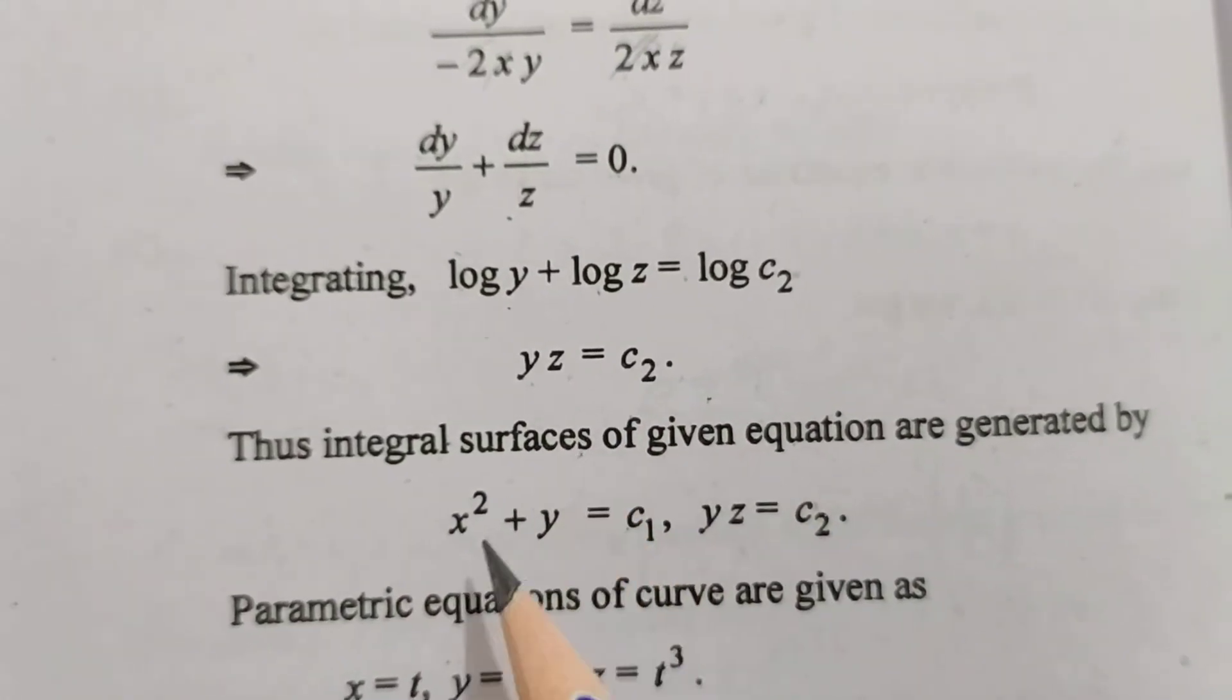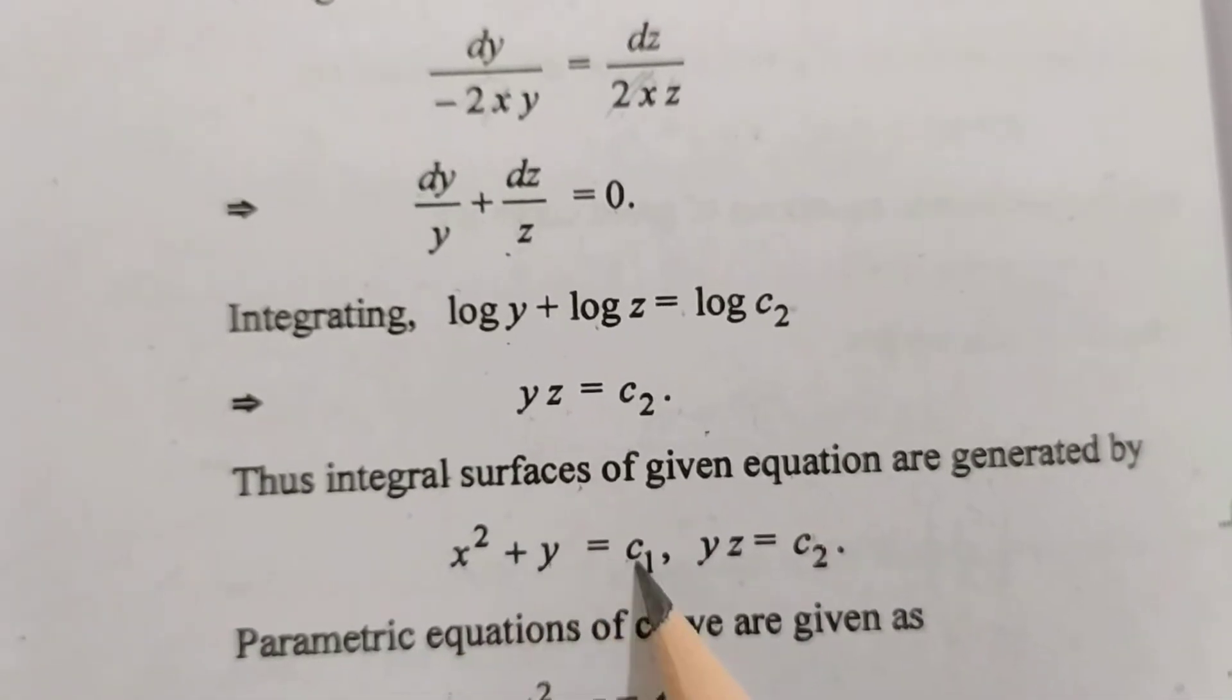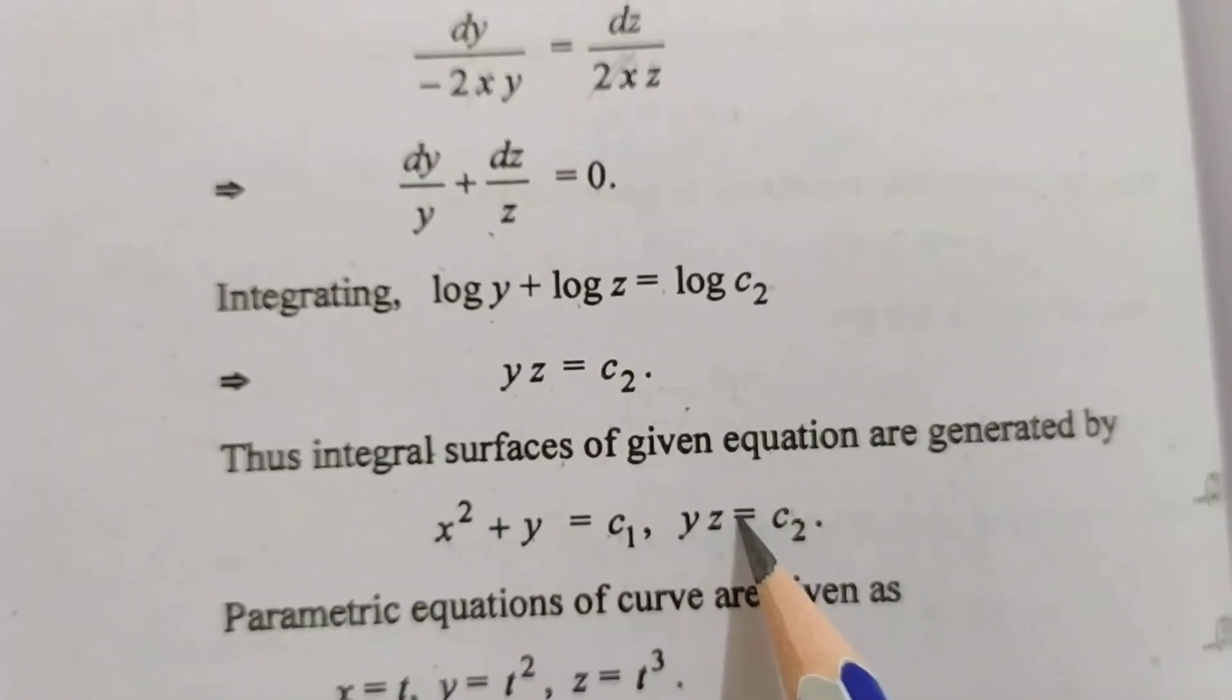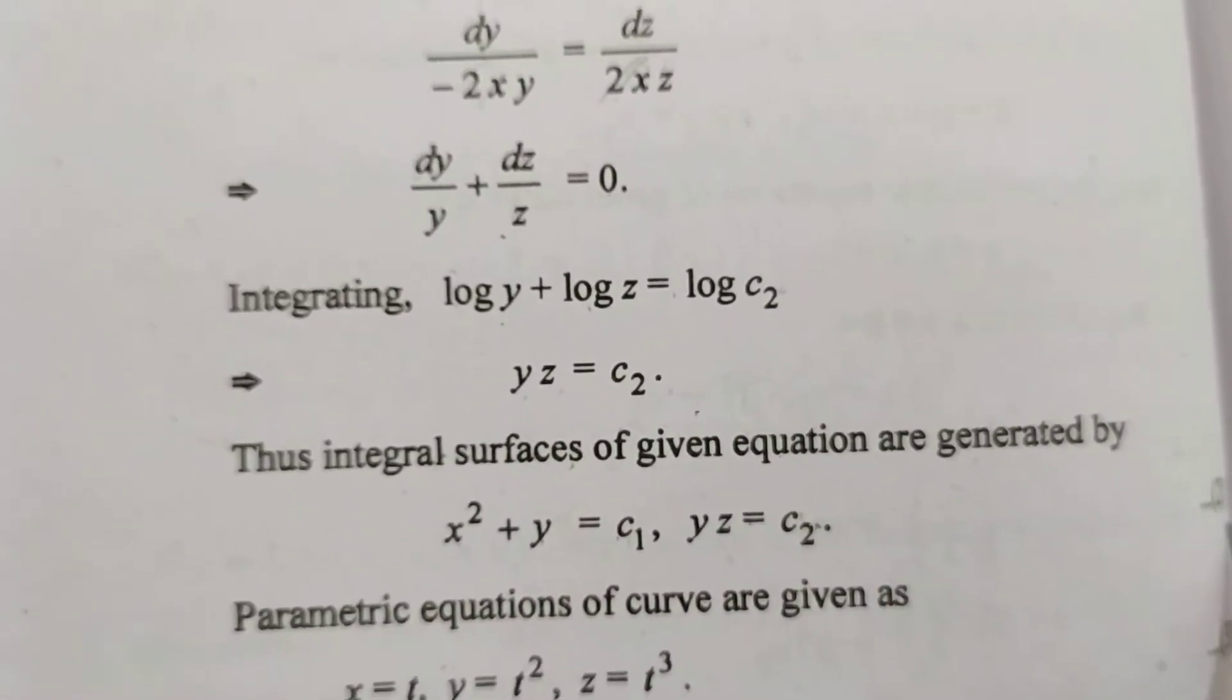To humari integral surface ke aage: x square plus y is equal to c1, yz is equal to c2. Equation 2.